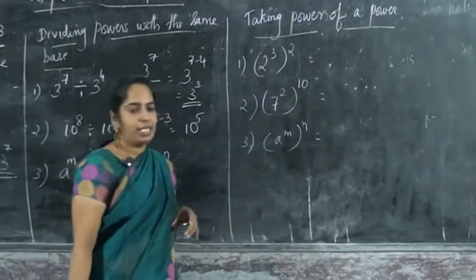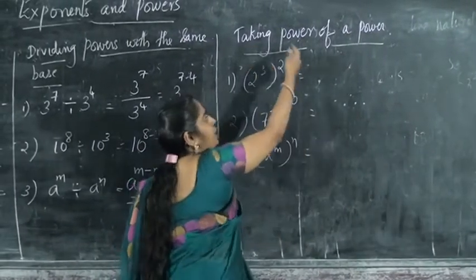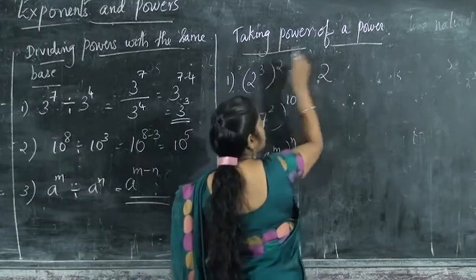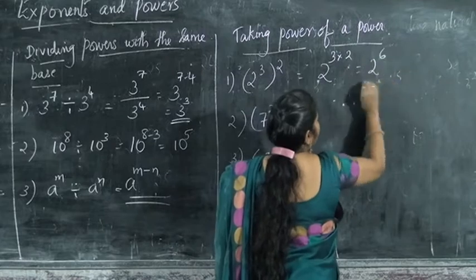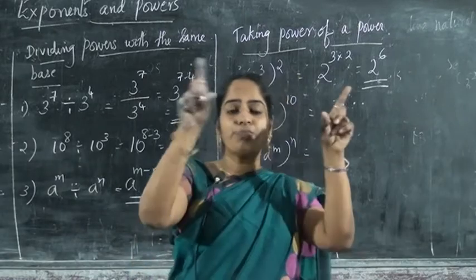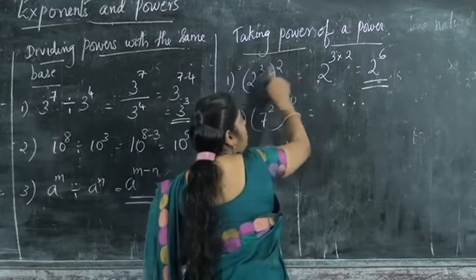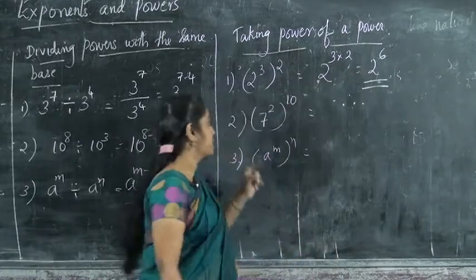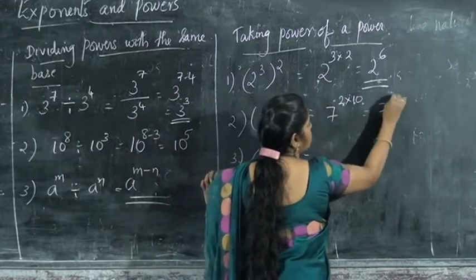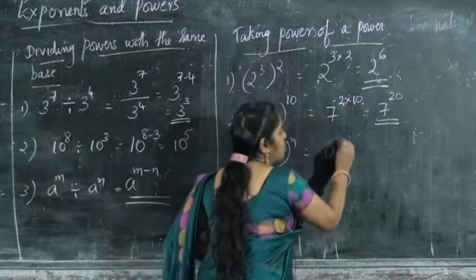Again we are taking powers of a power. Powers of a power means, for example, 2 raise to 3, whole raise to 2. If the power of a power, we multiply the powers: 2 raise to 3 into 2, that is 2 raise to 6. And 7 raise to 2, whole raise to 10 means it is 7 raise to 2 into 10, that is 7 raise to 20. In general: a raise to m, whole raise to n, means a raise to mn.